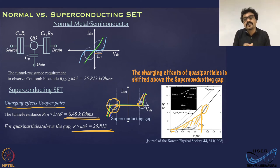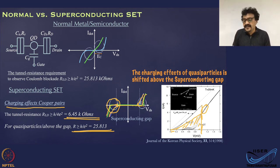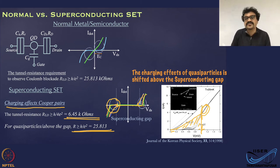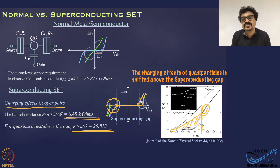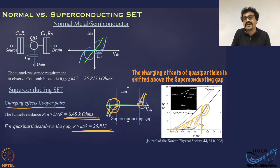The charging effects of Cooper pairs and transport features involving Cooper pairs are seen until the edge of the superconducting gap. Once you cross the gap, you have only electrons in the system, and the quantum dot exhibits charging effects of only electrons. In nutshell, the charging effects of quasiparticles is shifted above the superconducting gap the moment you have superconductivity. When you turn off superconductivity by application of a magnetic field, you can see the whole curve shifts back to the origin.